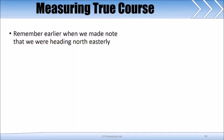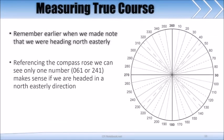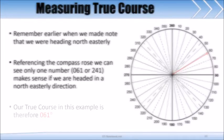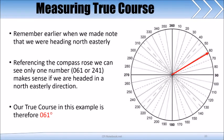Remember earlier when we made note that we were heading generally in a northeasterly direction. First, referencing the compass rows to the right, we can see that only one number, be it 061 or 241, makes sense if we are heading in a northeasterly direction. It is clear to see here that our true course is in fact 061 degrees.